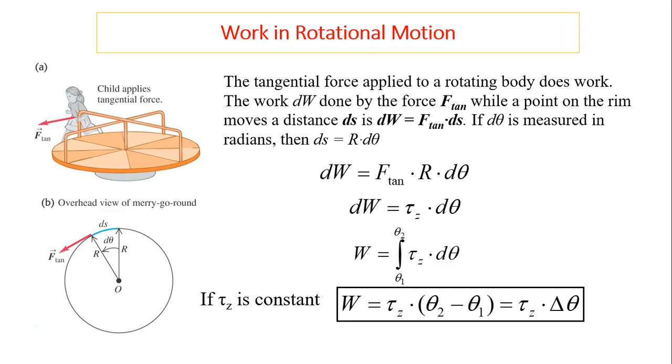Working in rotational motion. Here is a picture where a child applies a tangential force. When the child applies tangential force causing this merry-go-round a displacement d theta, the child is doing work. The tangential force applied to a rotating body does work. The work dw done by the force, when a point on the rim moves the distance ds, is dw equals f tangential times ds. Now f tangential times r, that is a torque.